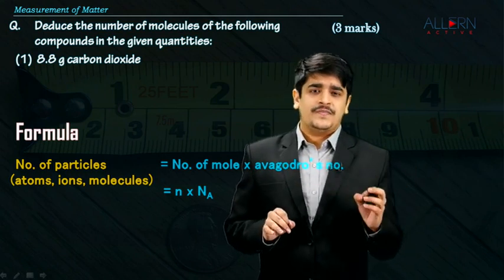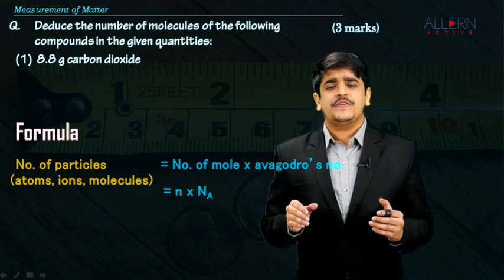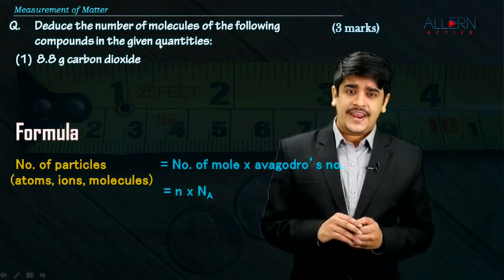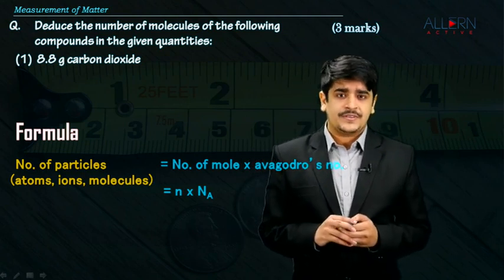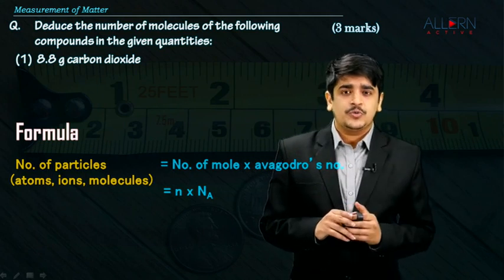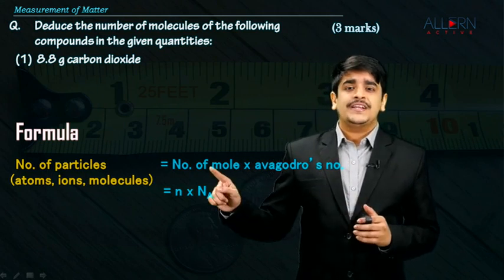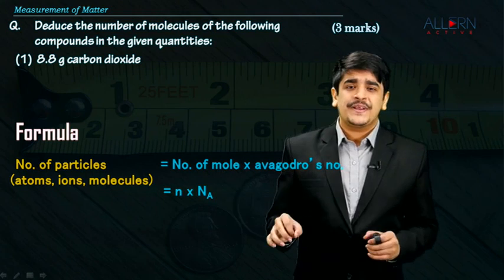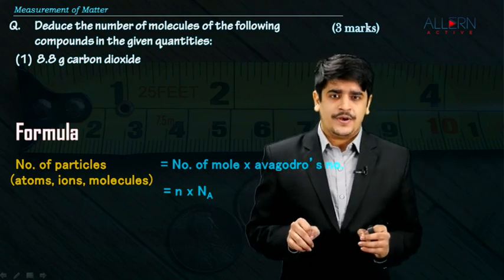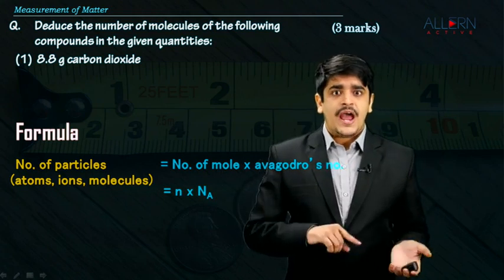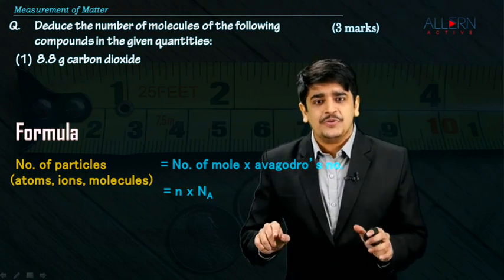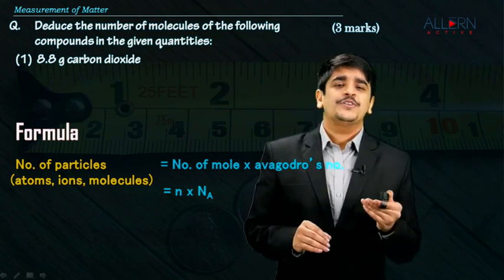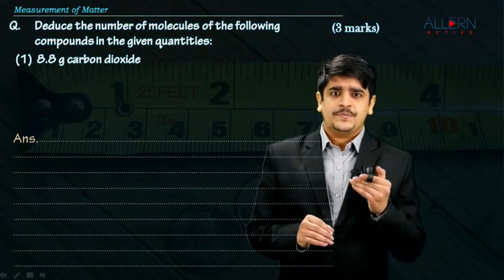Think about this very carefully. If you need to find out the number of particles present in 8.8 grams of carbon dioxide, the first thing you need to do is calculate the number of moles of carbon dioxide present in 8.8 grams. For doing that, you need the molecular mass of carbon dioxide. Let's go through this step by step.